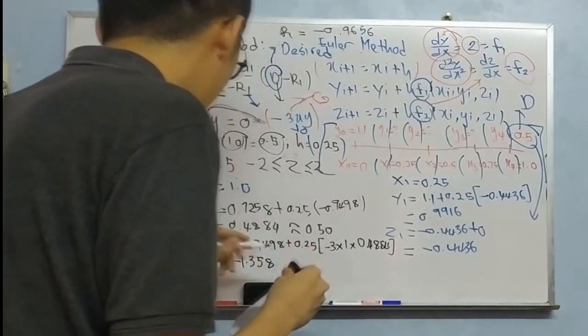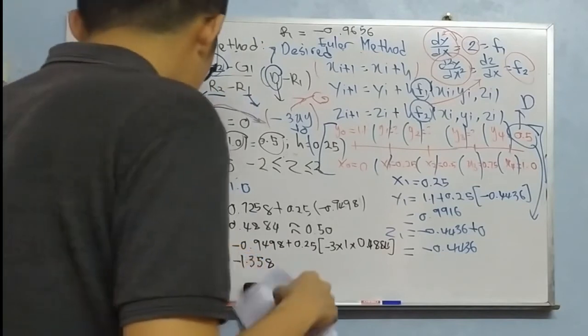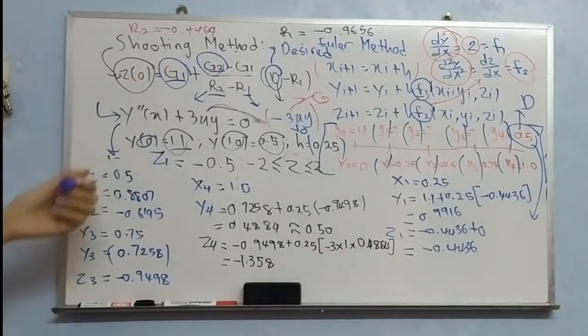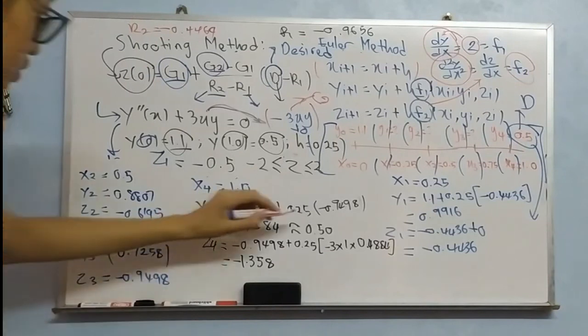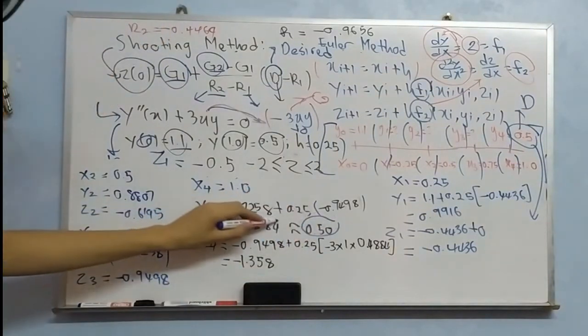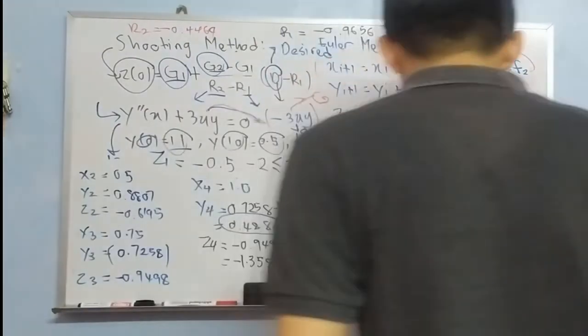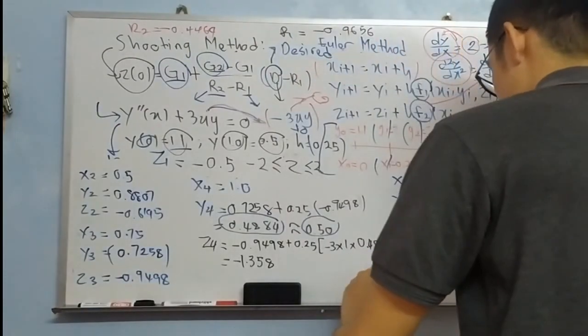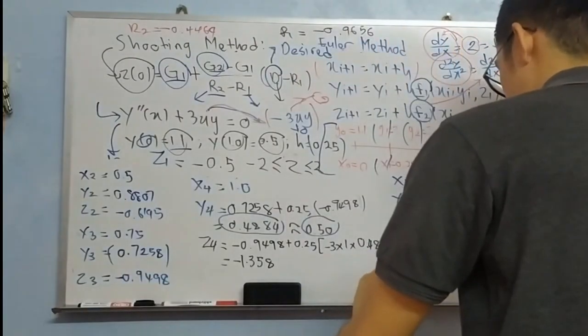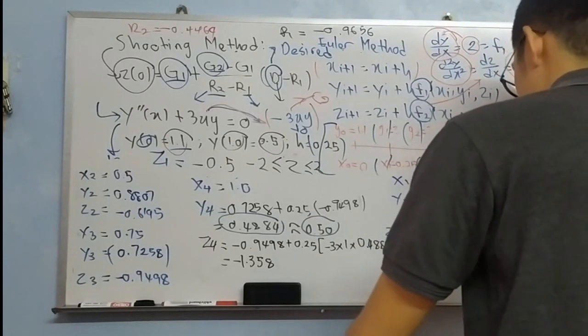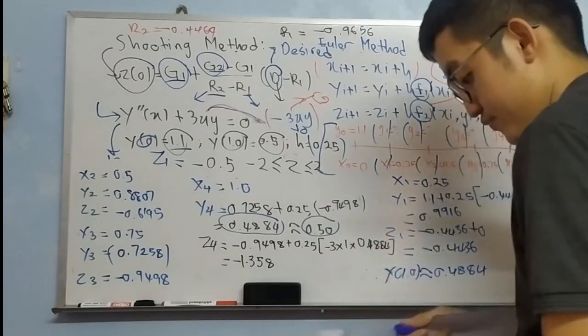So this is our final answer. We obtain what we want according to shooting method: 0.5. We won't obtain exact solution, we just obtain approximate answer. We can't obtain exact value. So now, I will write Y(1.0) approximately equals 0.4884. This is my final answer.